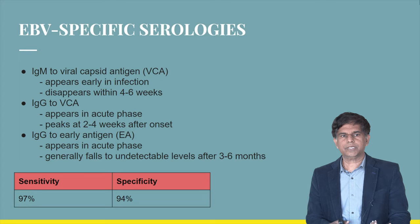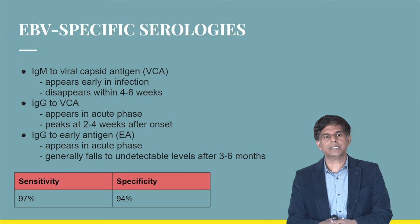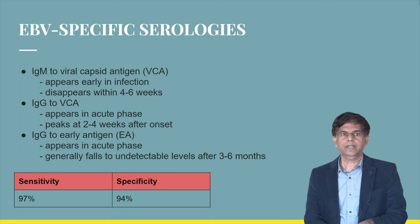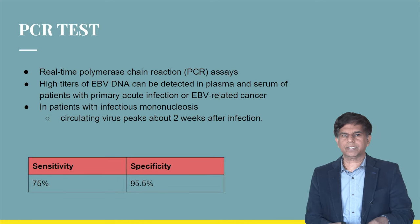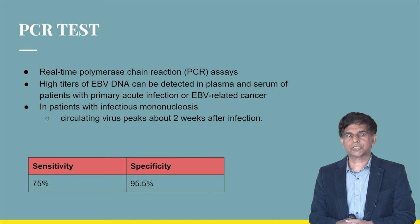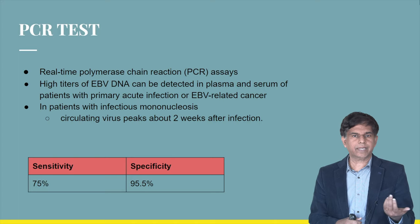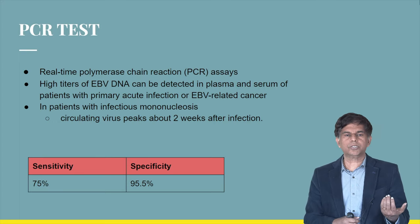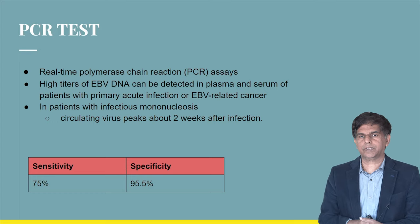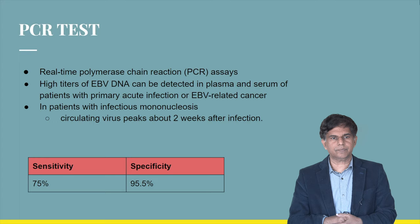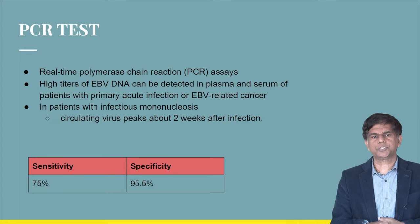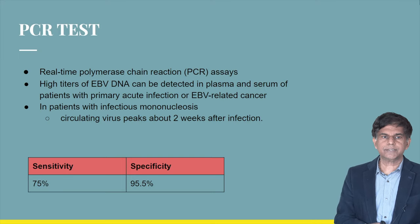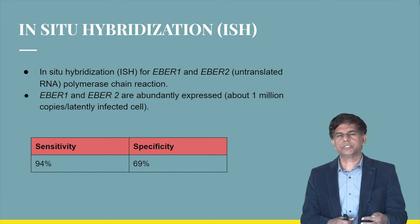EBV-specific serologies have extremely high sensitivity and specificity — 94% to 97%. The PCR test (real-time polymerase chain reaction assay) can detect high titers of EBV DNA in plasma and serum. In patients with infectious mononucleosis, circulating virus peaks about two weeks after infection. PCR has a sensitivity of 75% and specificity of 95%.